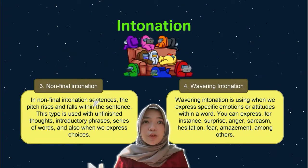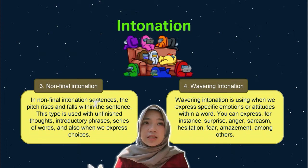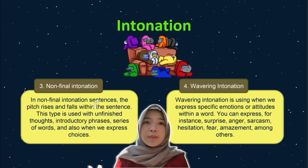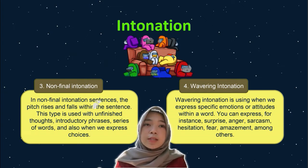The third is level intonation — no high, no intonation rise — meaning not relying on the intonation of the six tones, which rises and falls within the sentence. This type is used when listing items. The nature represents a sequence of words that express choices.